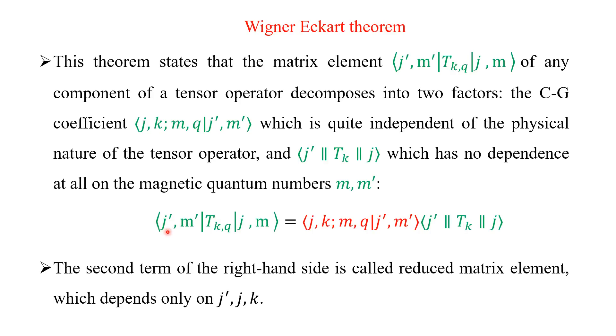So, in simple formula form, we can represent the Wigner-Eckart theorem as follows. That is the product of ⟨j' m'|T_{k,q}|j m⟩ which is equal to ⟨j, k; m, q|j' m'⟩ multiplied with ⟨j'||T_k||j⟩. This term in green color is reduced matrix element and this red color one is the usual Clebsch-Gordan Coefficient.